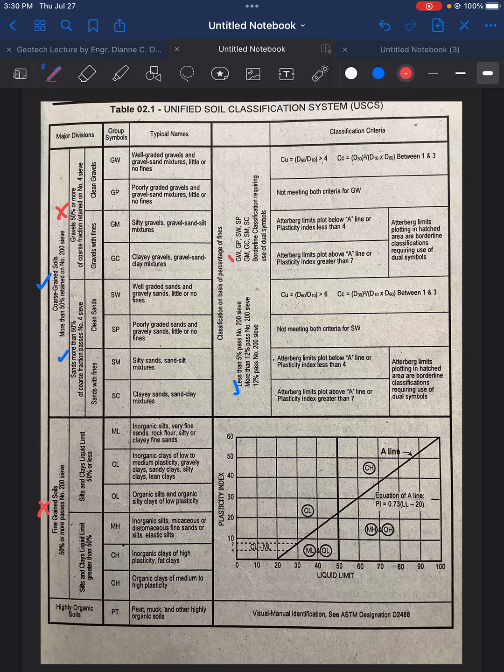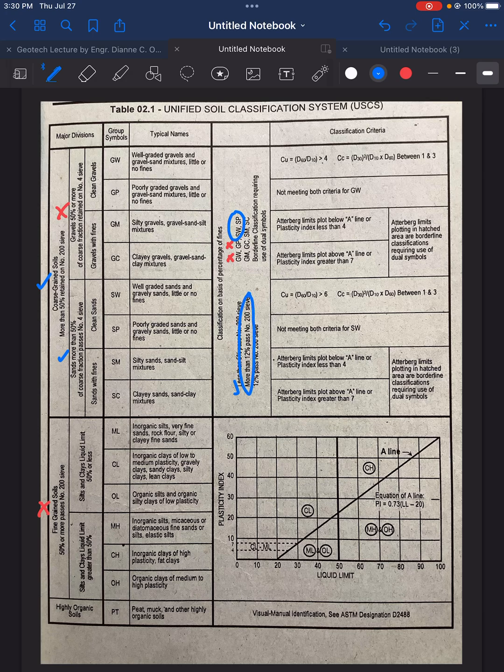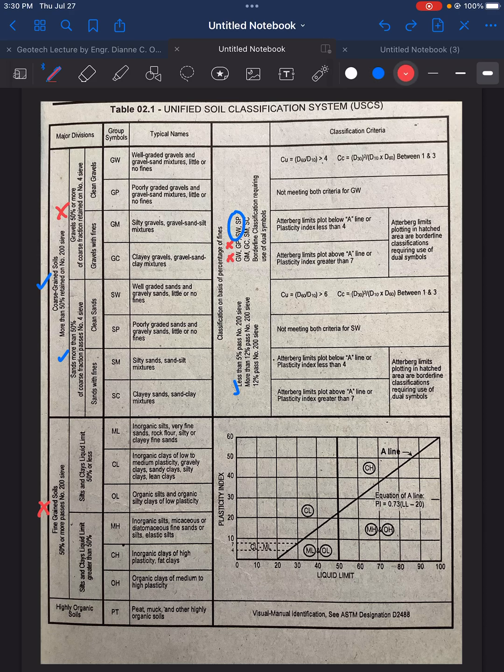Previously, we already crossed out GW and GP. So we will now choose between SW and SP. Next criteria says here, more than 12% passing sieve number 200, which is wrong. We know that 4%, there is only 4% passing sieve number 200.